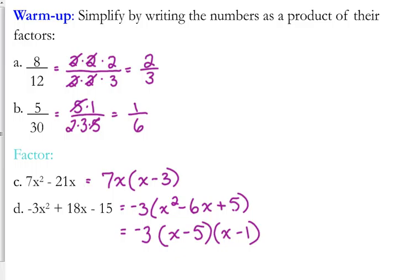You start by taking out the GCF of negative 3x. Be careful that negative 3 changes the signs too. Okay, that was something that I noticed on the test. And then that factors to 2x minus 5 times x minus 1.